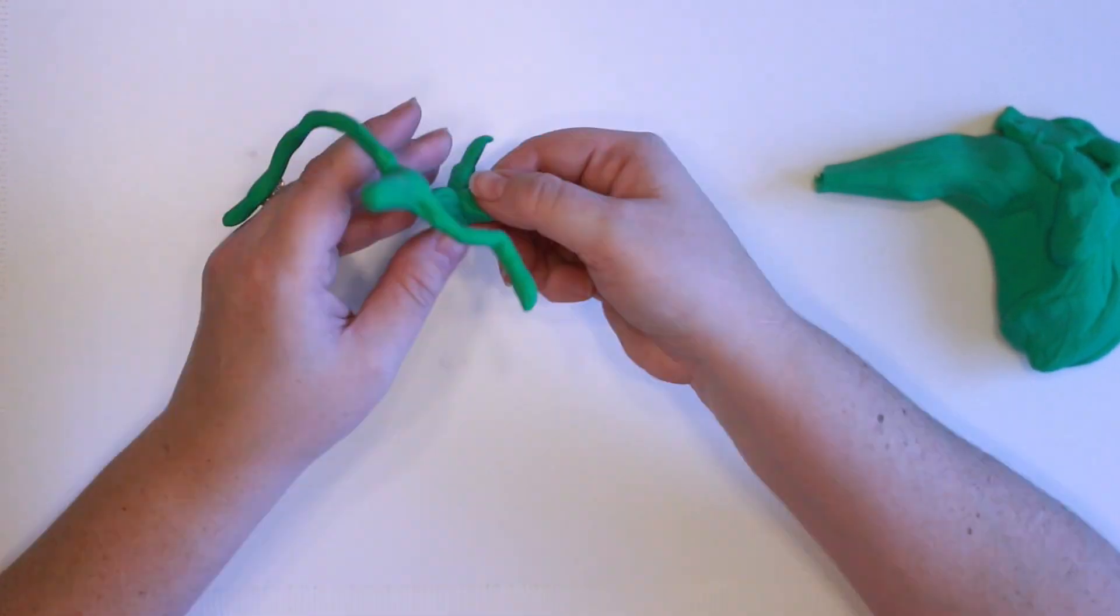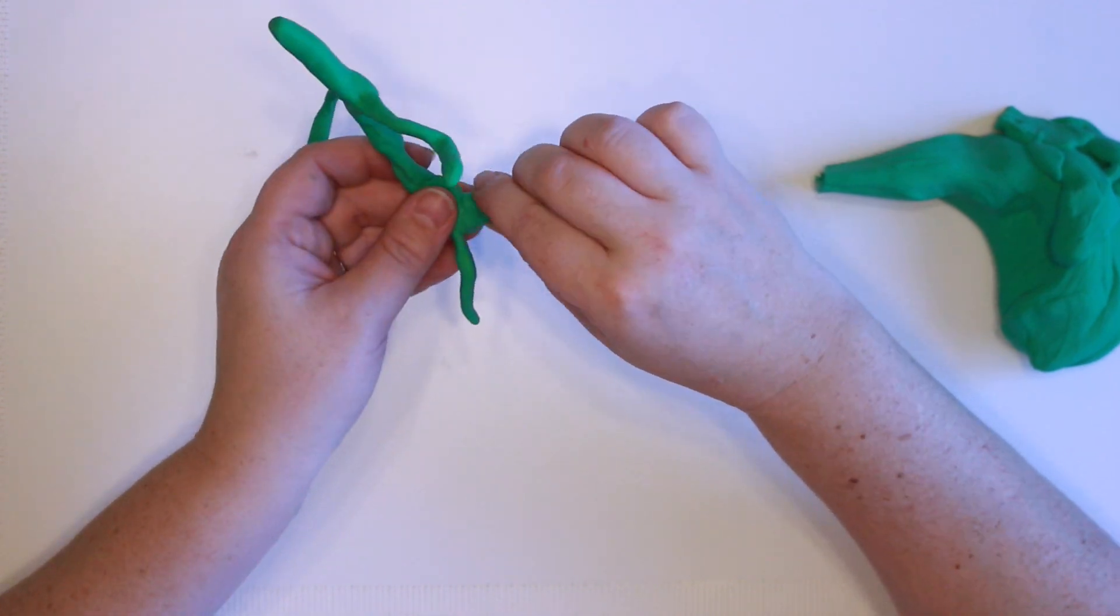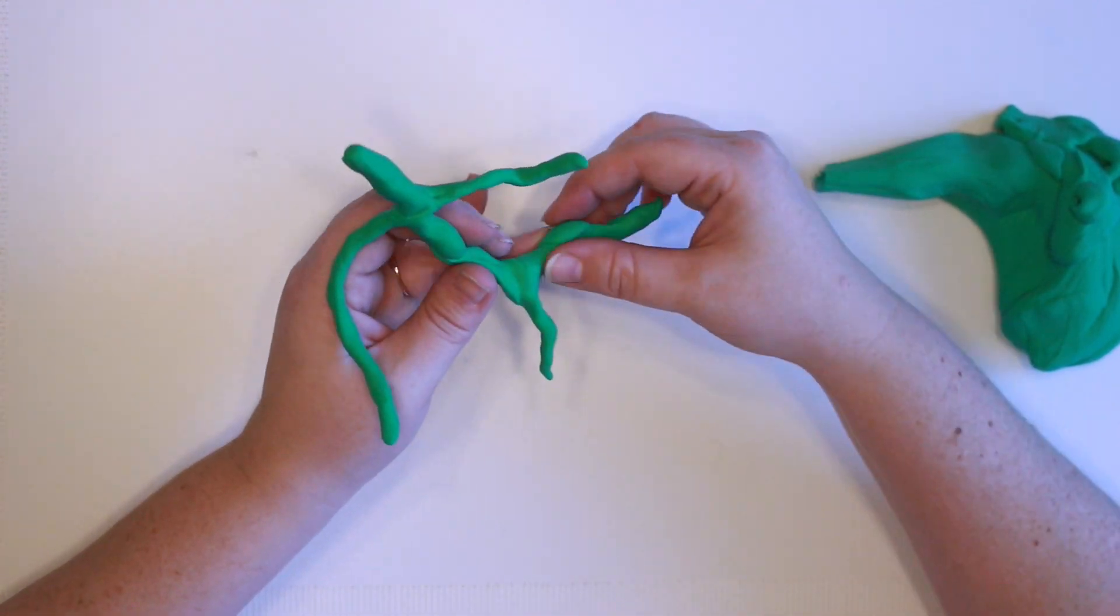So that's our basic shape and now I'm going to use my fingers to start making him a little bit more Picket-like.